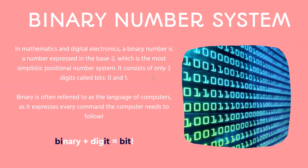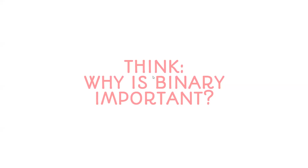Now we're going to be talking about the binary number system. In math and digital electronics, a binary number is a number expressed in base two. This is the most simplistic number system, and it only consists of two digits called bits: zero and one. Binary is the language of computers because it expresses the commands that the computer needs to follow. What we see on screen is not what the computer uses to do the behind-the-scenes processing.